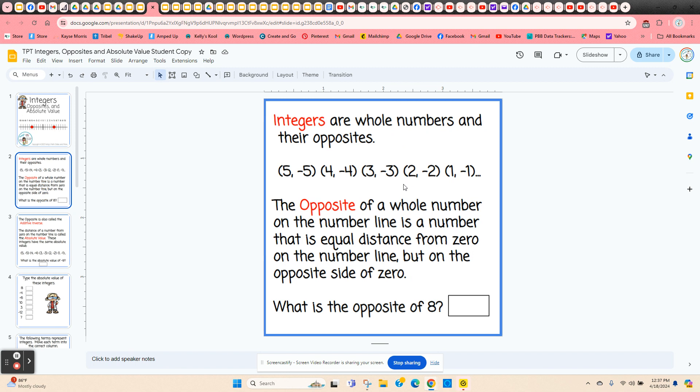Integers are whole numbers and their opposites. The opposite of a whole number on the number line is a number that's equal distance from zero, but on the opposite side of zero. So it asks the students to just type in what is the opposite of eight, and they're going to type in negative eight.